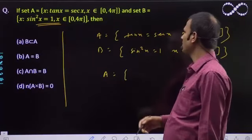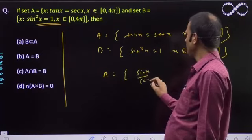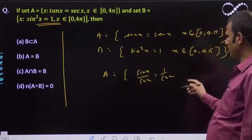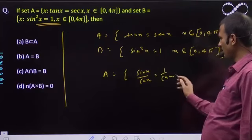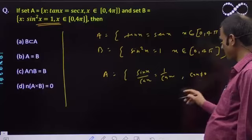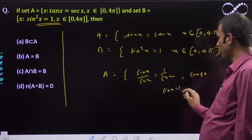tanx = secx. What does this mean? sinx/cosx = 1/cosx. If we take it this way, then cosx should not be 0. If you cancel, then we write cosx is not equal to 0. After canceling, what do you get? sinx = 1.